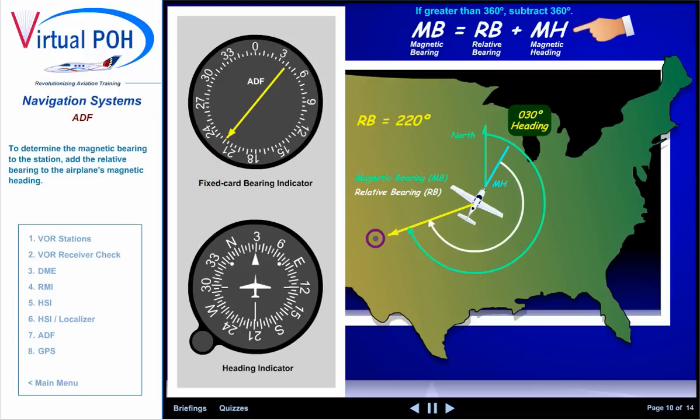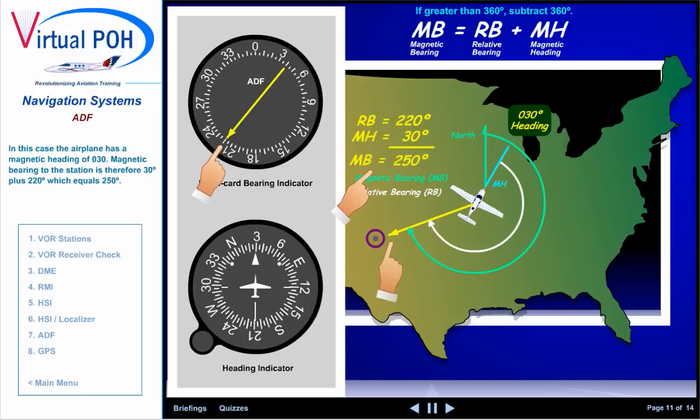To determine the magnetic bearing to the station, add the relative bearing to the airplane's magnetic heading. In this case, the airplane has a magnetic heading of 30 degrees. The magnetic bearing to the station is therefore 30 degrees plus 220 degrees, which equals 250 degrees.